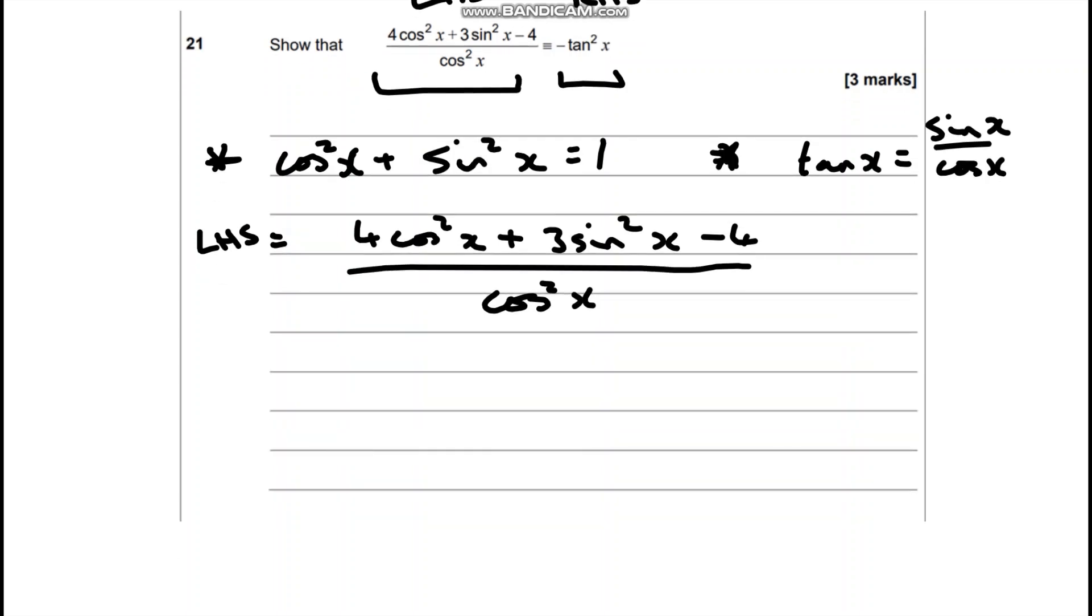Now if we're trying to make it look like some form of tan on the right hand side I need the cosines on the bottom and the sines on the top. So I somehow need to get rid of the cos on the top. So we've got cos squared x.